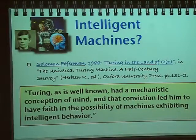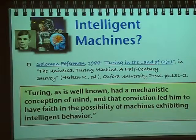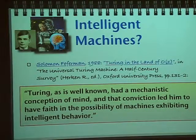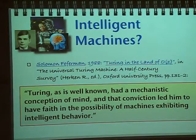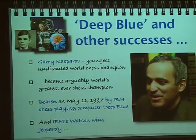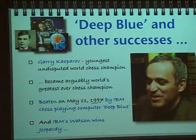Here's where it gets interesting: intelligent machines. How do you relate that to intelligent machines? Turing wanted to build an intelligent machine. Sol Fefferman wrote a nice paper on Turing's 1939 paper. He says Turing had a mechanistic conception of minds, and that conviction led him to have faith in the possibility of machines exhibiting intelligent behaviour. People have tended to go along with this, spending a lot of time trying to build intelligent machines — without huge success.